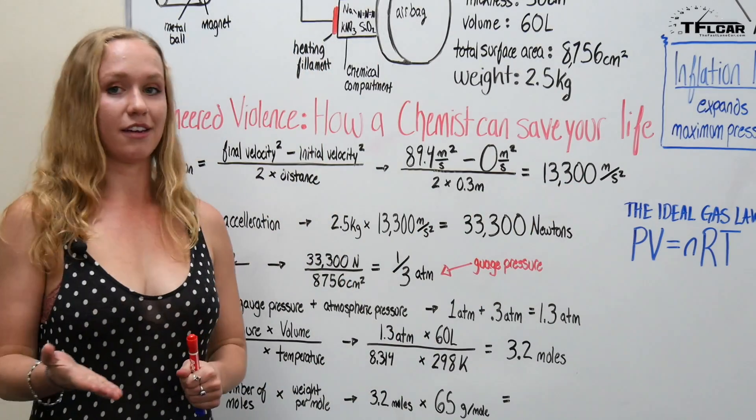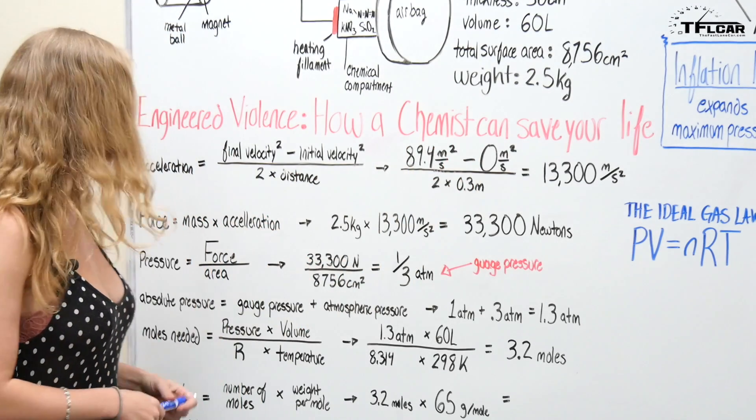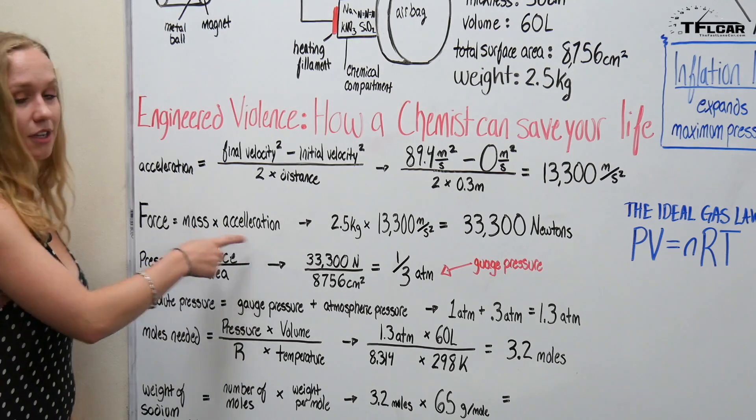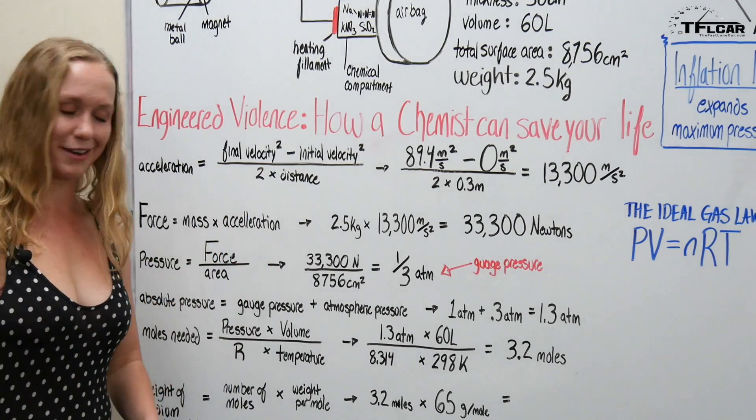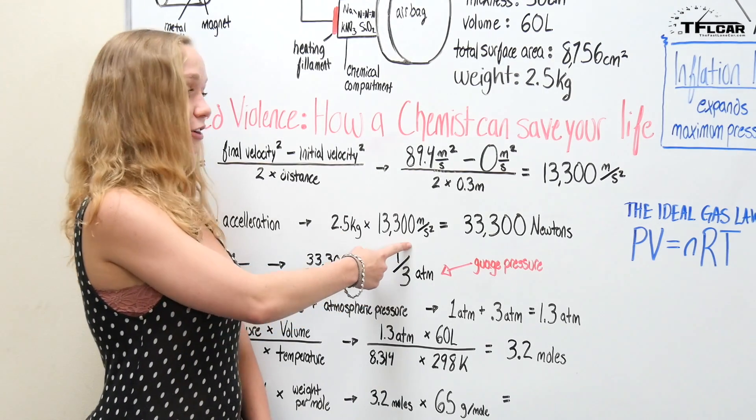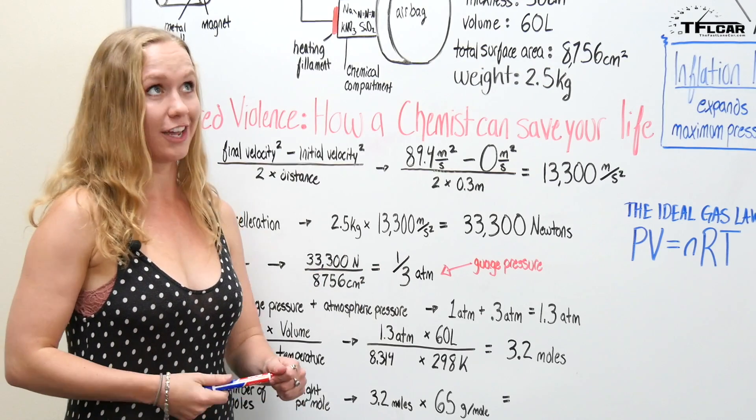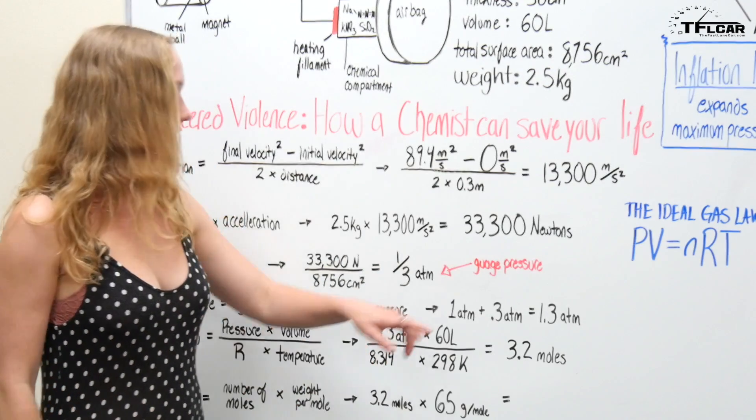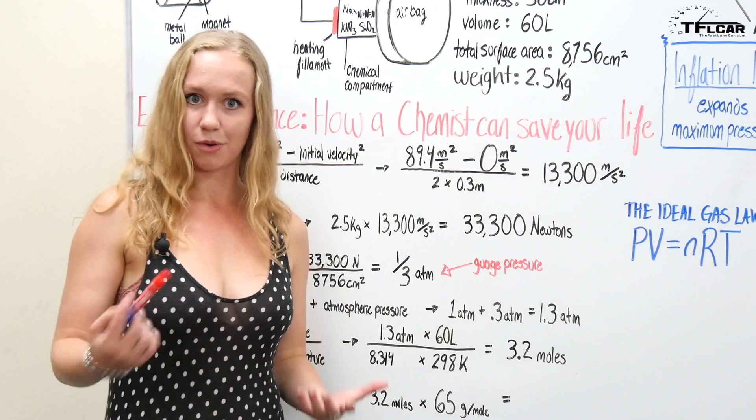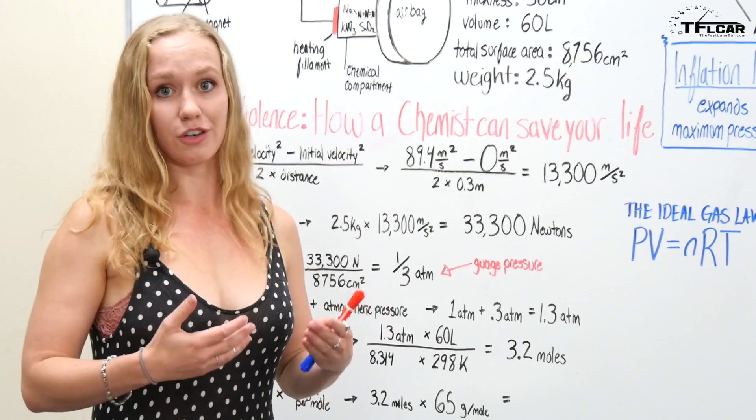So the next thing you're going to need to figure out is force. How much force is this airbag expanding with? Well force is equal to mass times acceleration. So again just simply plugging in the numbers that we have you have a 2.5 kilogram airbag multiplied by your crazy fast acceleration of 13,300 meters per second squared and you get 33,300 newtons and just for those who aren't very familiar with units newtons is just a simple measure of force.